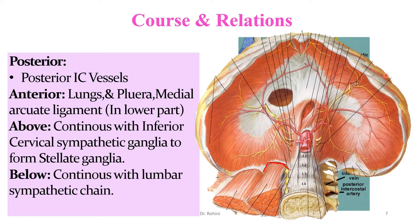This is a view of the diaphragm from below. We can see the vena caval opening and the aortic opening. The medial arcuate ligament is a thickened fascial band in front of the psoas muscle, from which muscular fibers of the diaphragm take origin. The sympathetic chain passes behind this medial arcuate ligament to continue as the lumbar sympathetic chain.